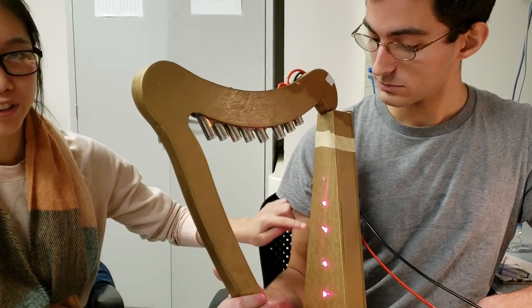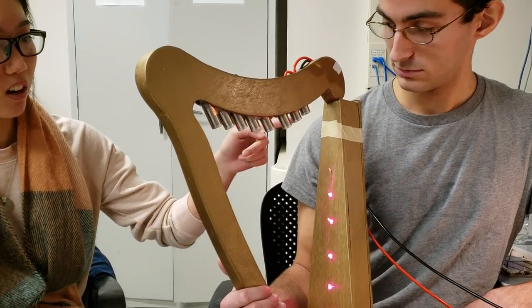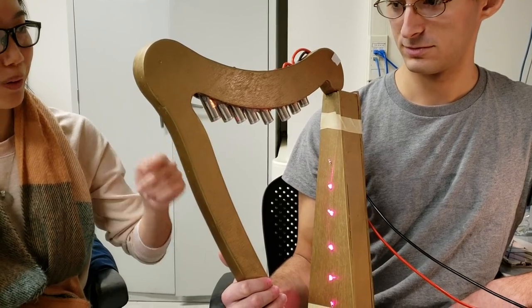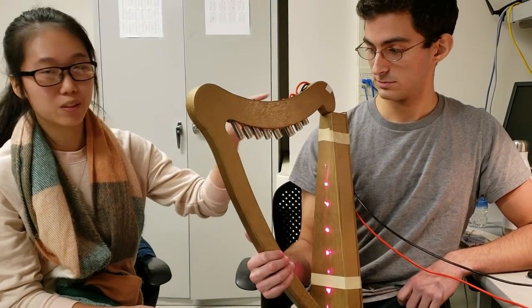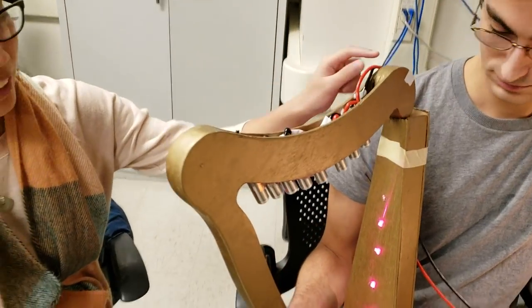And then these are all phototransistors. And these are all cat lasers, like cheap cat lasers that we ordered. And we've cut these to fit into the frame and we've secured them all together. There's one power line and one ground line.